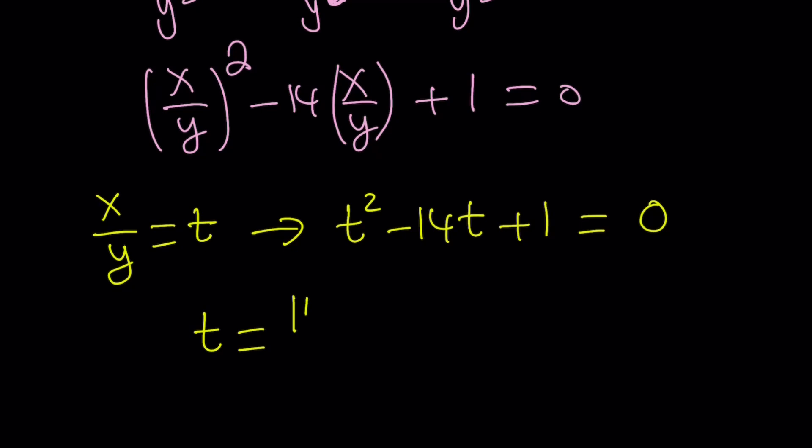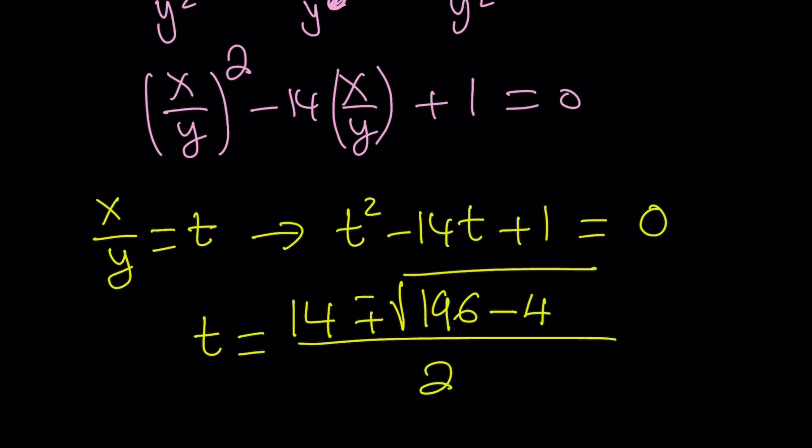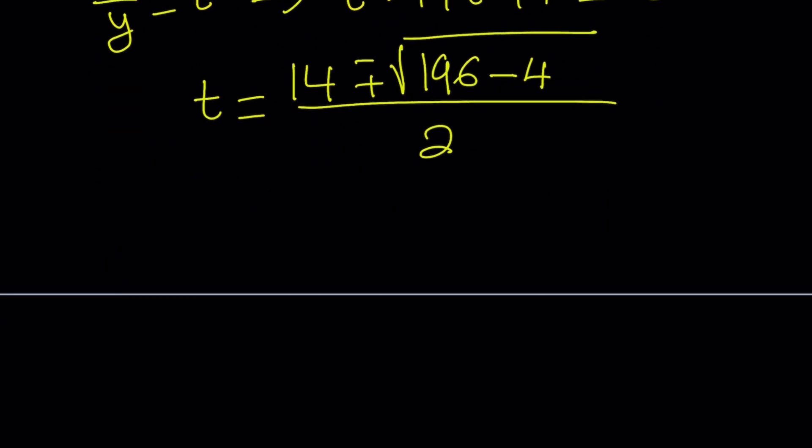t equals negative b plus minus the square root of b squared, which is 196, minus 4ac. That will be minus 4, right? And now we're going to divide the whole thing by 2a, which is 2. b squared minus 4ac. So now, let's go ahead and simplify this. t equals 14 plus minus the square root of 192 divided by 2.